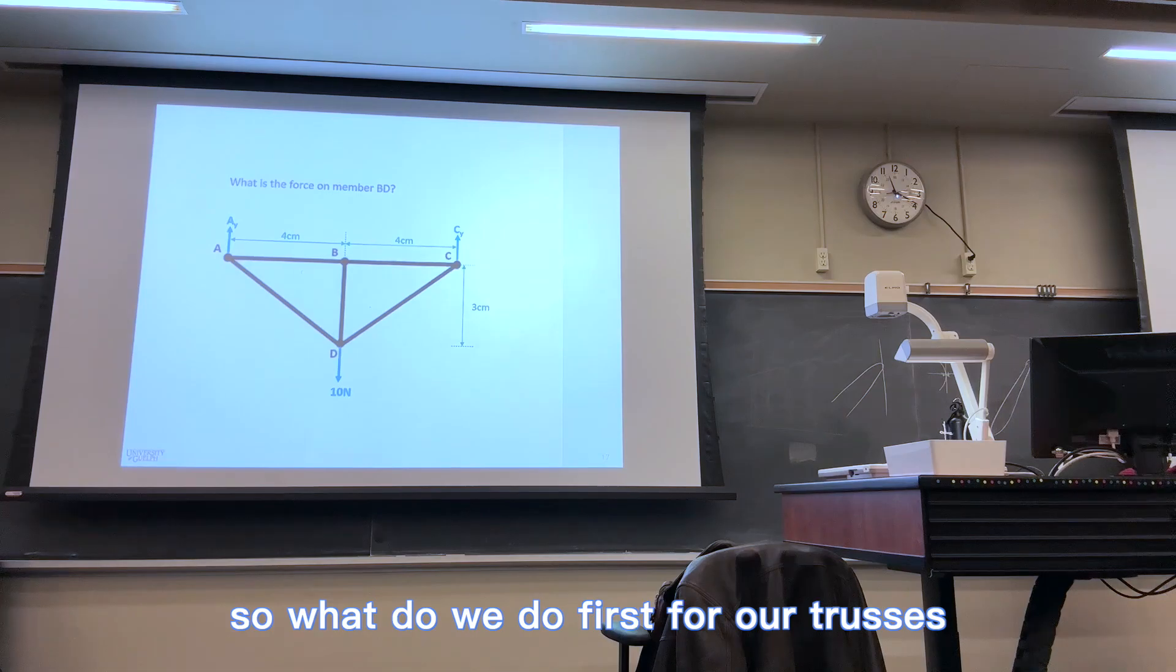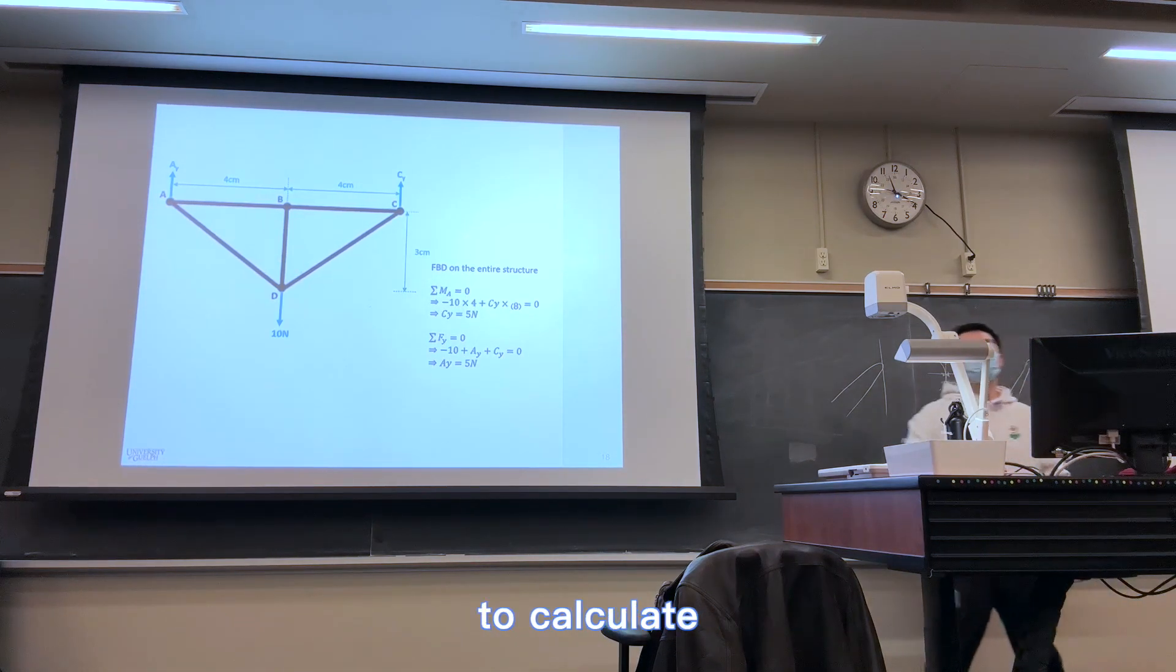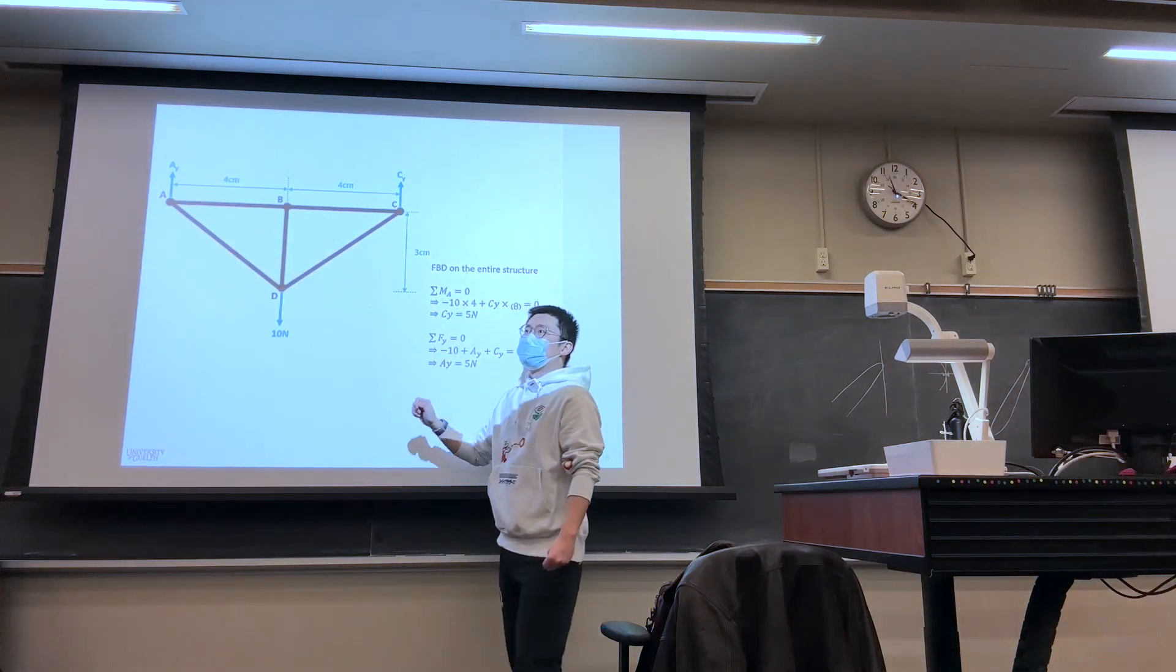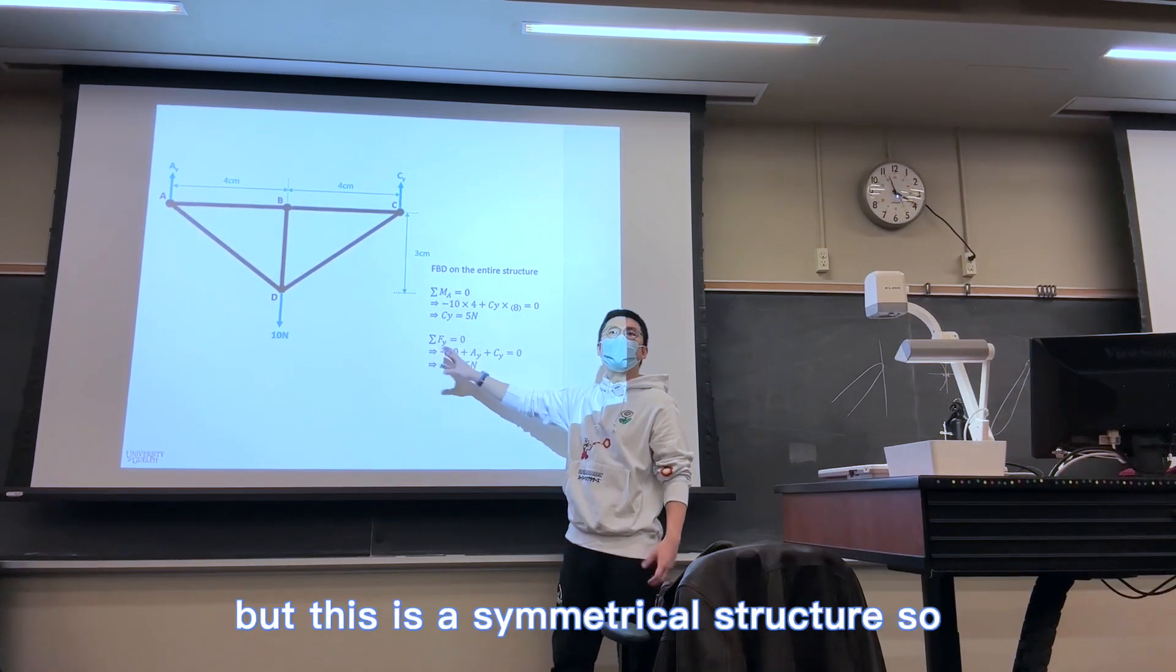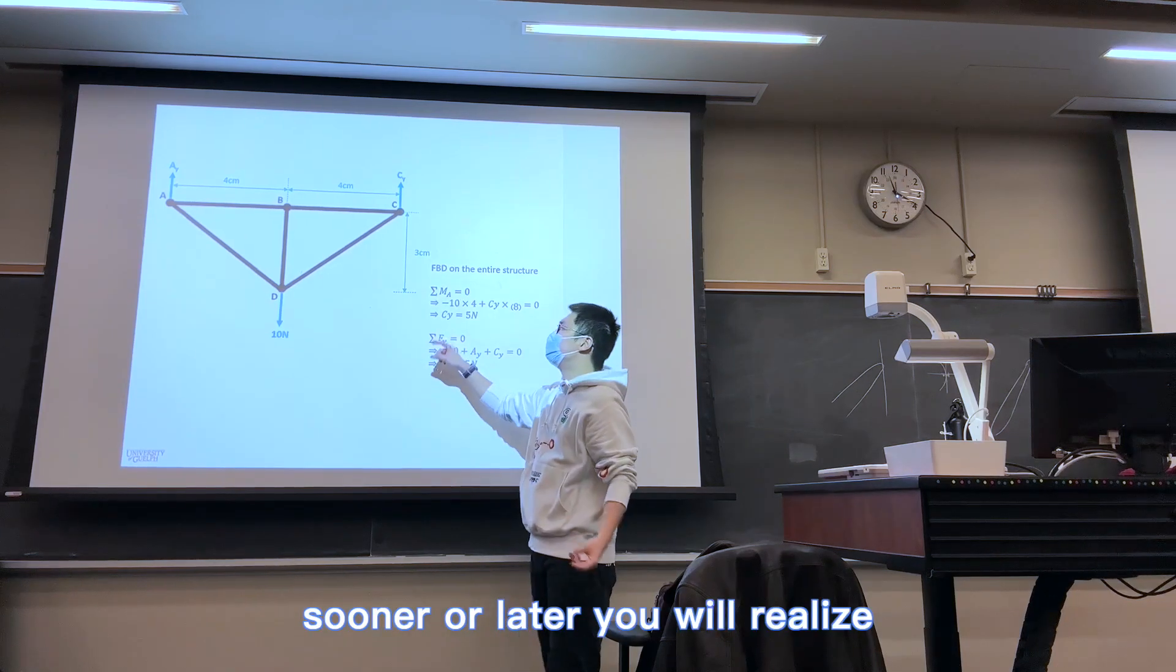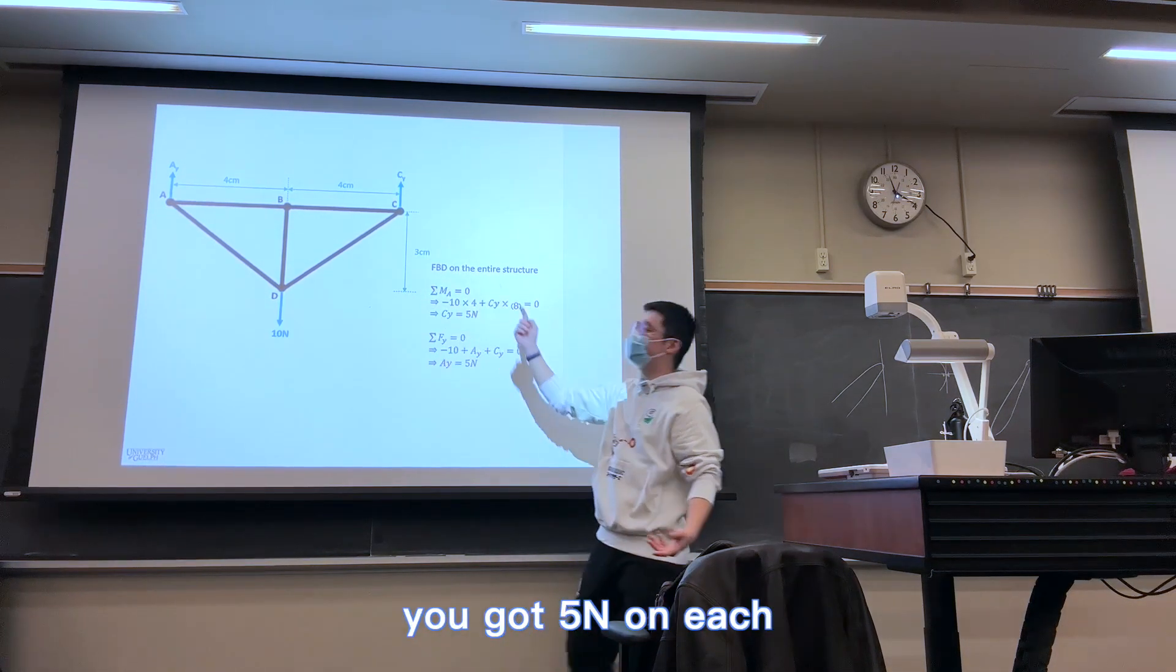So what do we do first for our trusses? We do free body diagram on the entire truss to calculate AY and CY, right? So we'll do sum of MA, sum of FY. But this is a symmetrical structure, so sooner or later you'll realize you can just divide 10 by 2. You've got 5 on each.